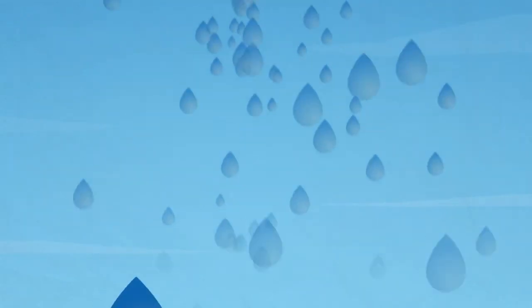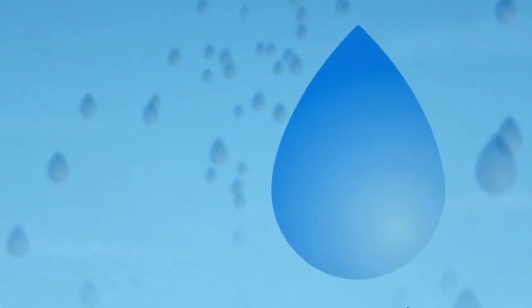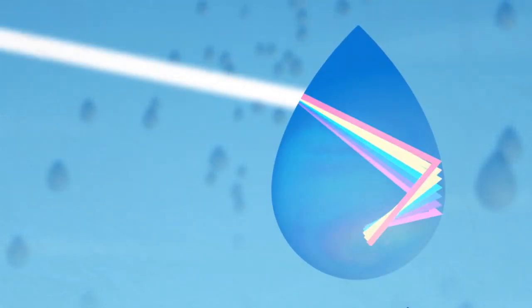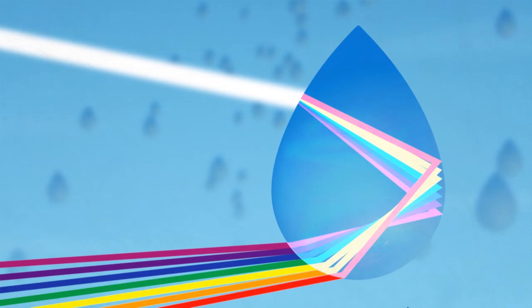Light travels more slowly through water than air, so that raindrops act as prisms, bending, separating and reflecting the light that shines through them.